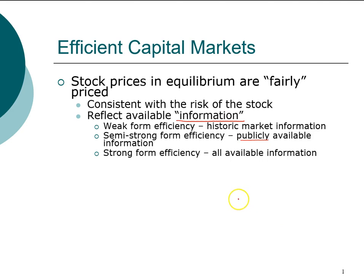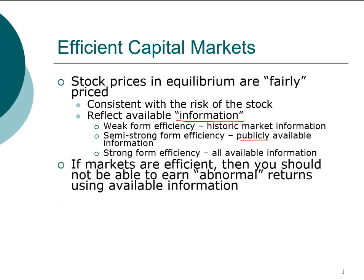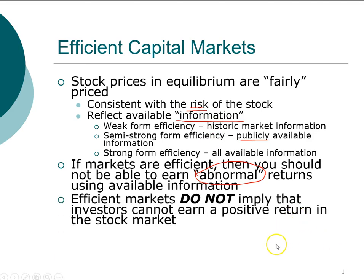What do we expect to happen if these conditions are satisfied? These conditions may or may not be satisfied, but it's important to understand what would happen if they were. The reason we care about market efficiency is that if the market is truly efficient, you should not be able to earn abnormal return using available information. Abnormal is defined very specifically: it means earning a return greater than what is consistent with the risk of the stock.